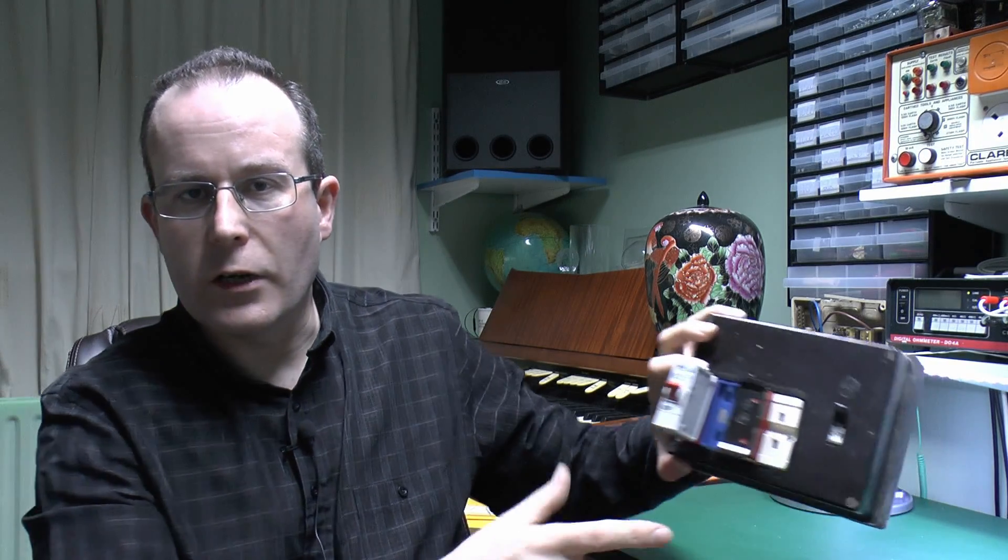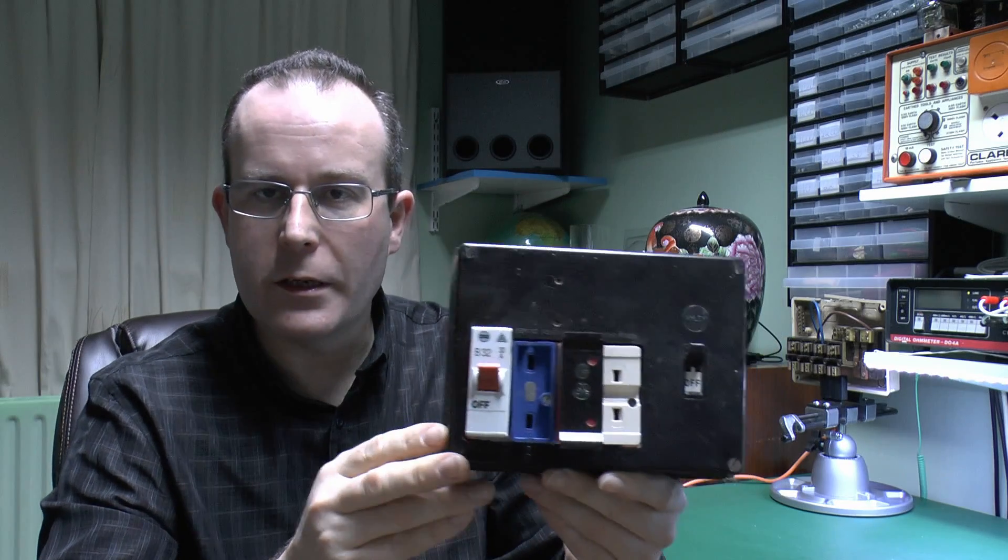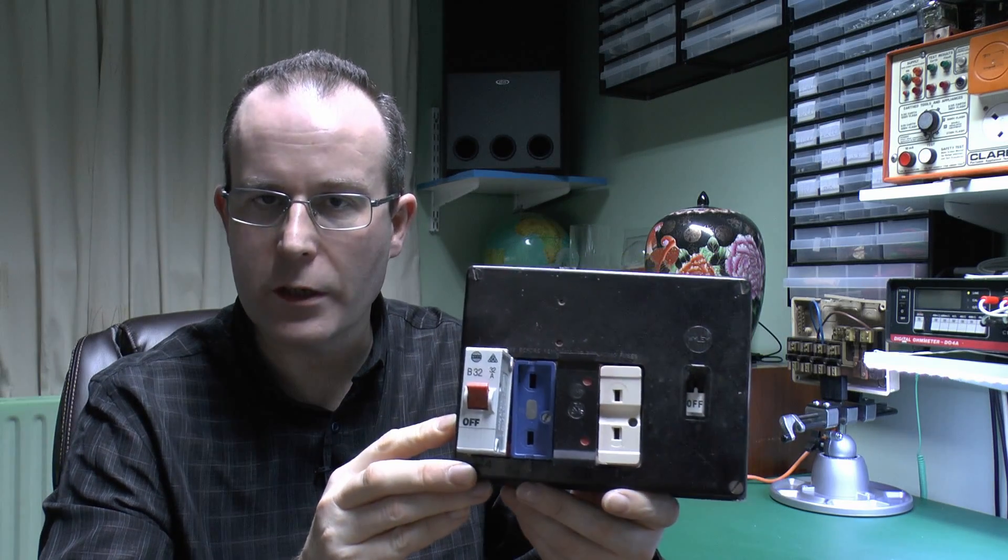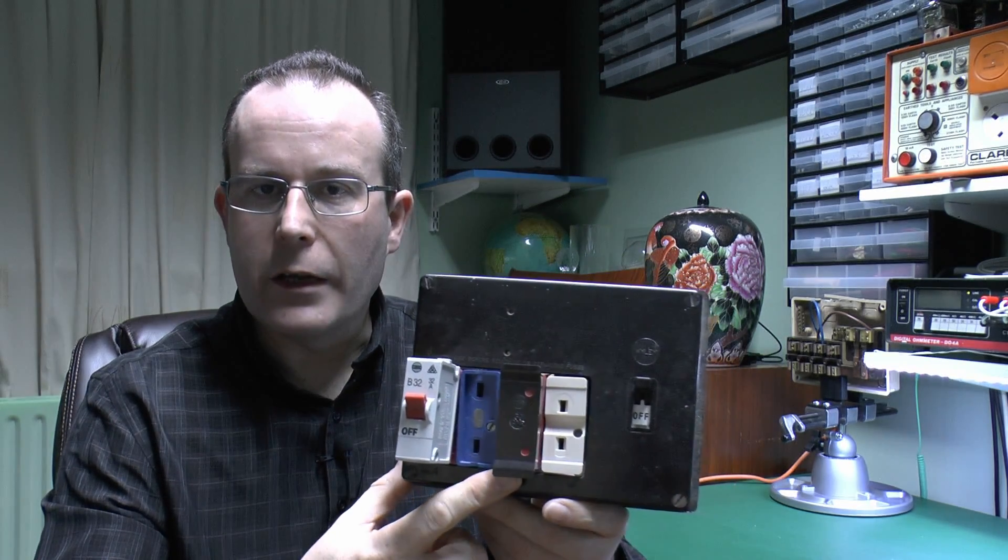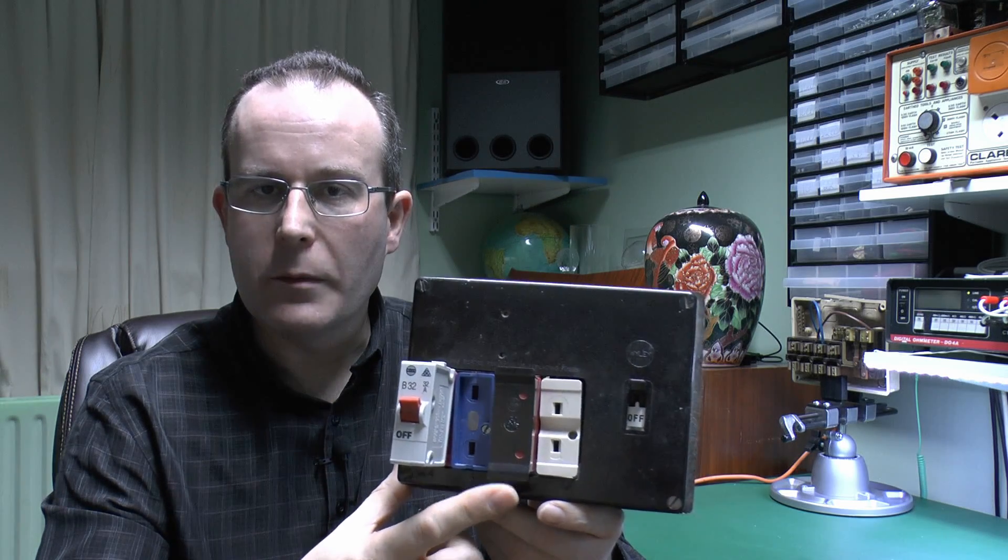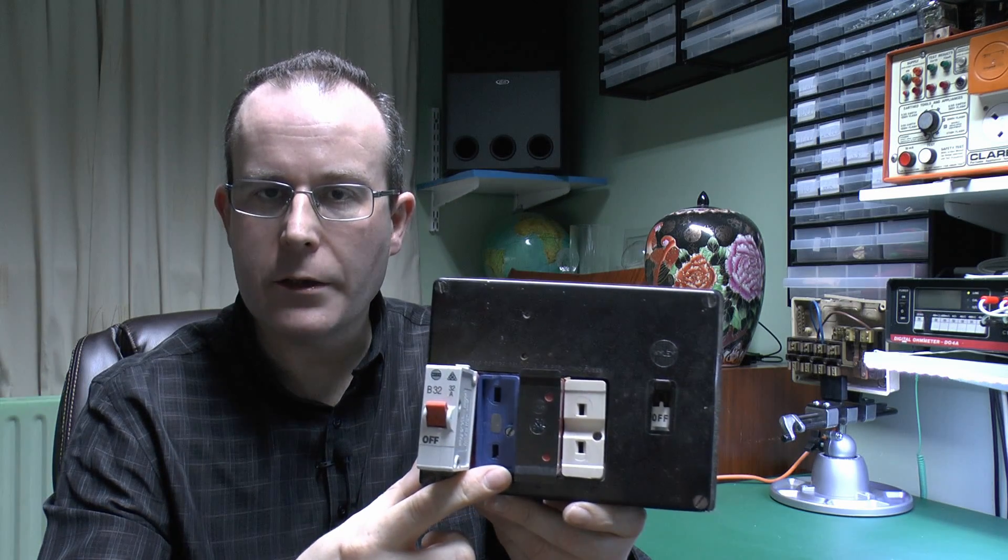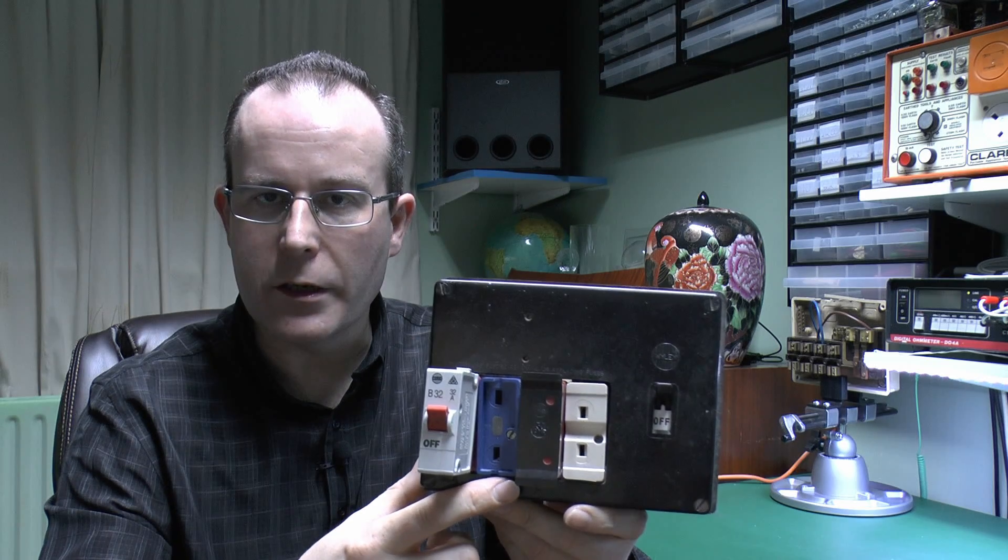These things are fitted into the Wilex fuse boxes such as this example here. This particular brand one is pretty old, probably 40 plus years old. Originally it would have had the rewireable fuses such as the one in the middle here, and then later on you can get the circuit breakers to plug in as a direct replacement.